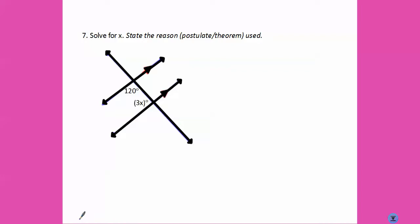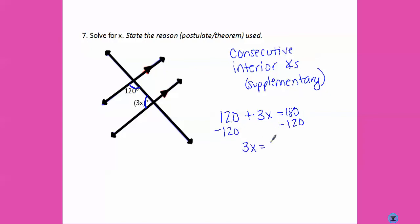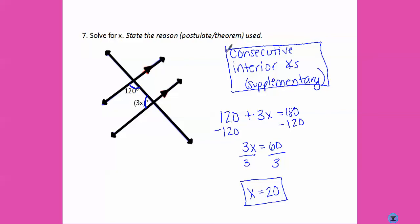What if some variables are involved? If we have one angle with 120 degrees and another angle with 3x degrees, those are on the same side of the transversal and next to each other, so these are consecutive interior angles, which means they're supplementary. So 120 plus 3x equals 180. Subtracting 120 from both sides gives 3x equals 60. Dividing both sides by three, x equals 20. We solved that by using the fact that consecutive interior angles are supplementary.